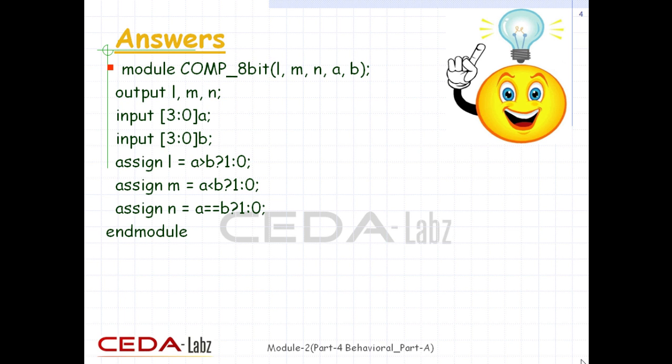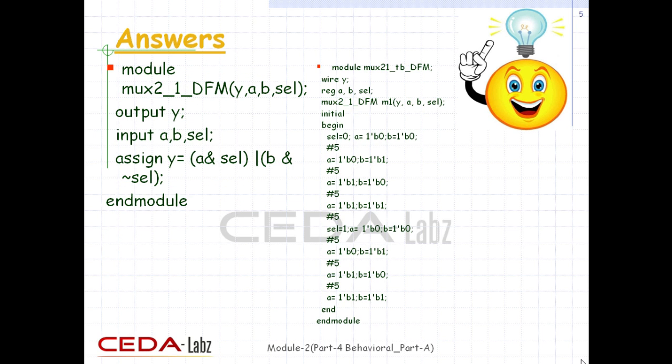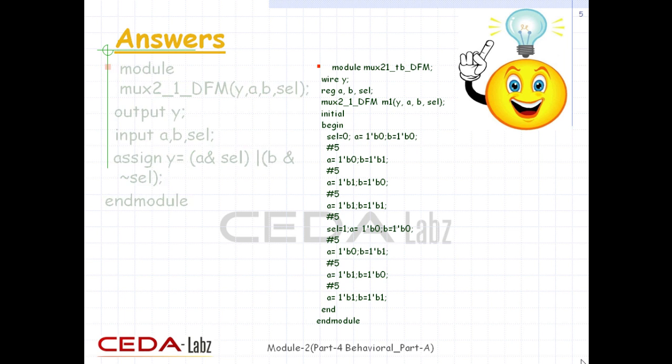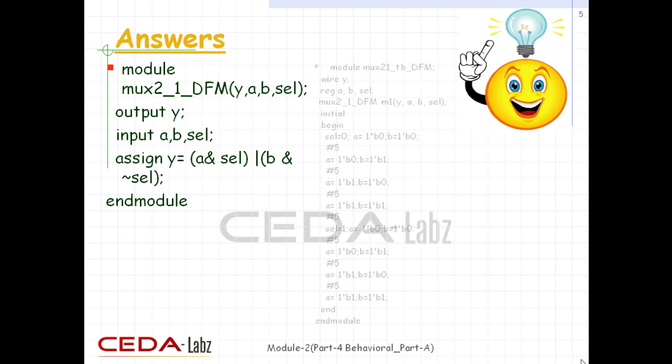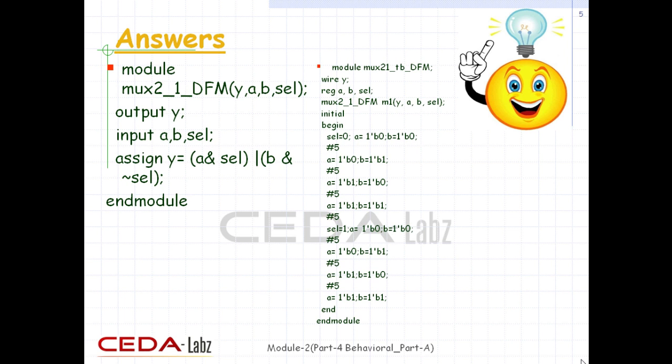The last question was to design a 2-1 multiplexer using the conditional operator. Both design code and test bench code are here. Now we are all set to move on to the next level of modeling.